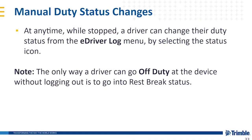Manual duty status changes: at any time while stopped, a driver can change their duty status from the eDriver log menu by selecting the status icon. The only way a driver can go off duty at the device without logging out is to go into rest break status. There is no longer an option for choosing on duty driving — you simply get in the truck, drive away, and once you go over 5 miles per hour it will put you into the driving status. Also on the yard move status, make sure you keep it under 20 miles per hour.